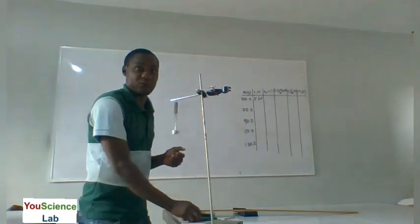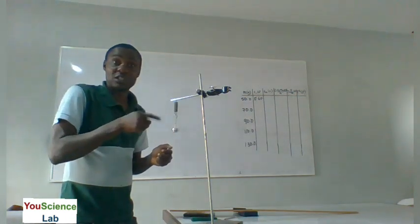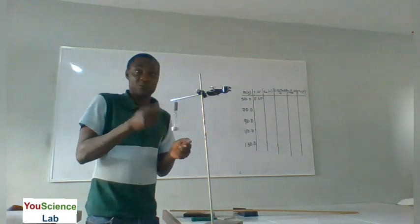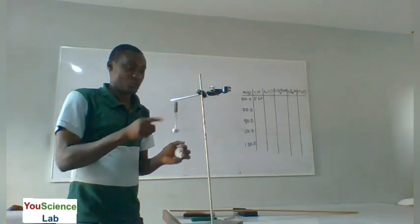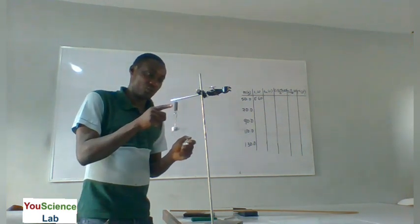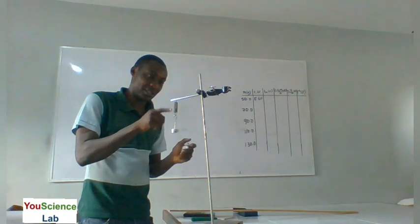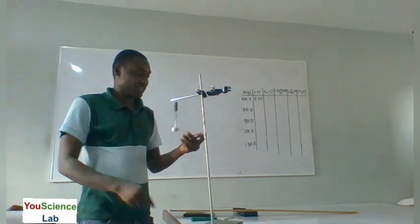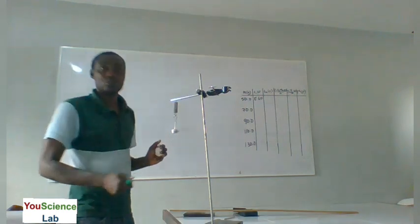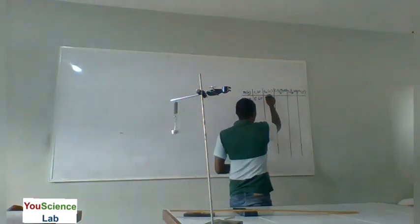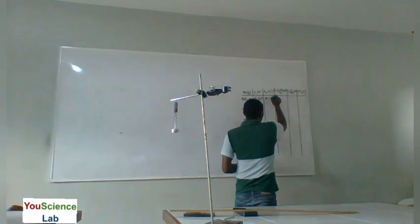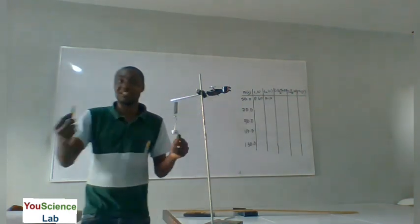I'm going to take it again for another trial. You can see it is still in oscillation so I don't need to depress it again — I can still count. I count 20 complete oscillations again. So this time around my time is 10.10 seconds. You see that there is a discrepancy between the two times — that's the essence of taking the time twice.